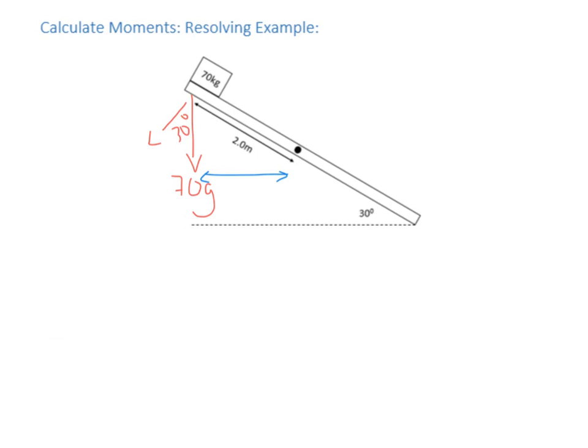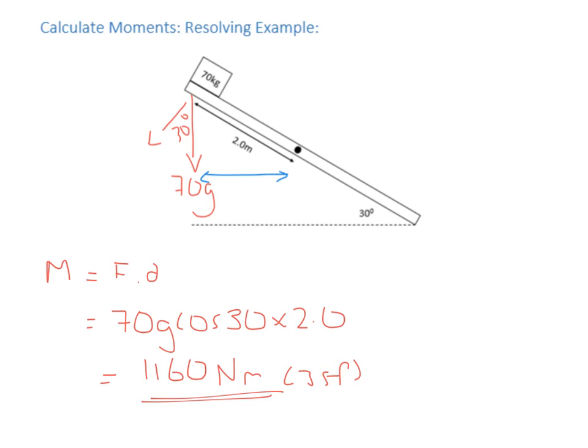So if we want to work out the moment here, so we're looking at the moment about the pivot point, so it's force times perpendicular distance. So let's work out the force. So 70g cosine 30 to work out the component perpendicular to slope, so then we can just use the distance given. And then if we type those in we come out at 1160 newton meters to three significant figures. There are more terms and I have rounded it, but three significant figures would be appropriate in this situation here.